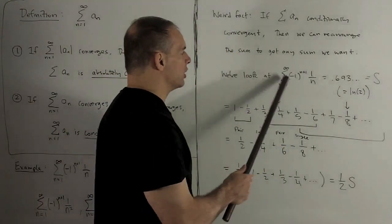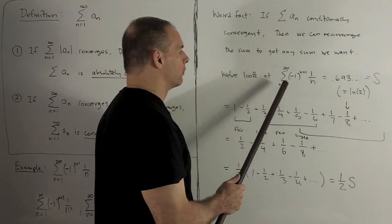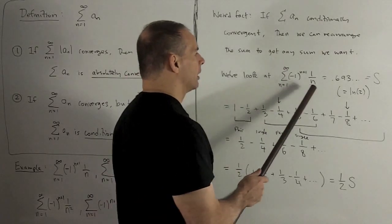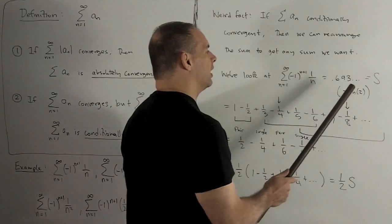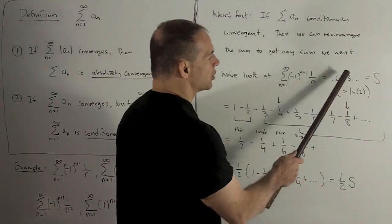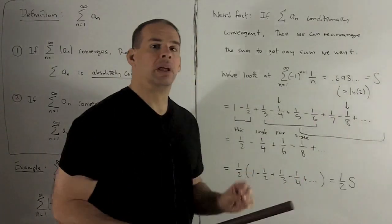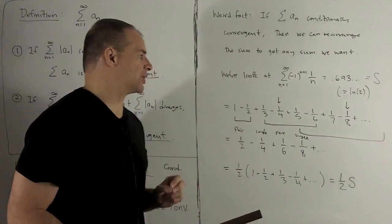So let's take a look at the alternation of 1 over n going from 1 to infinity. That we saw before. That's going to go to .693 and I'll call that s. That's also equal to natural log of 2. We'll see that later when we do power series.